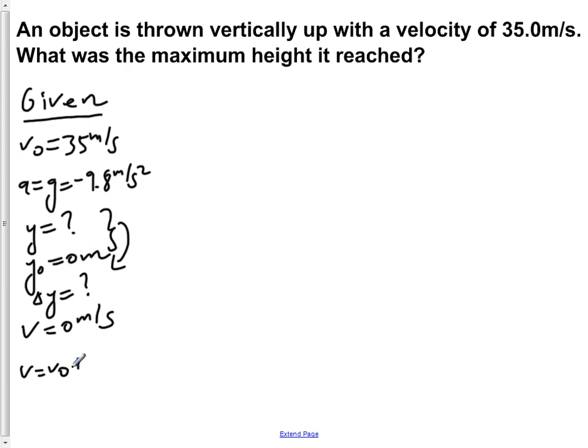Write down the three kinematics equations: v equals v naught plus a t, v squared equals v naught squared plus 2a delta x, and y equals y naught plus v naught t plus one half a t squared.